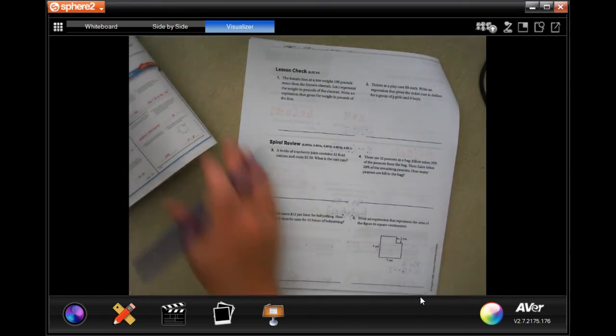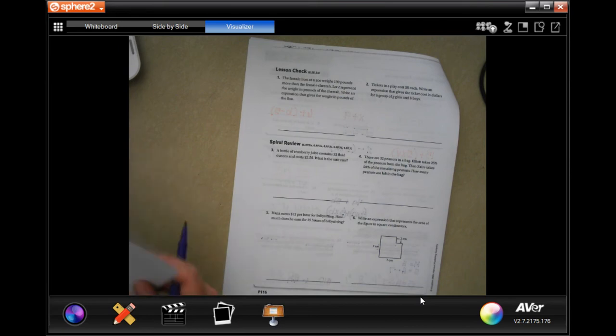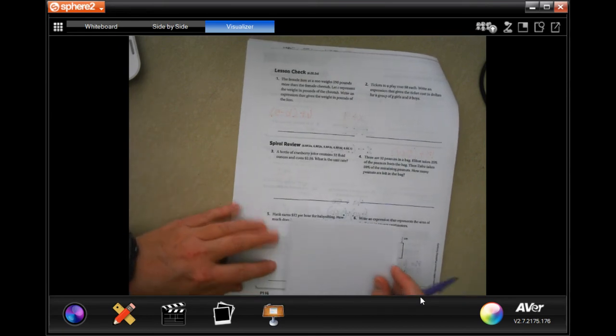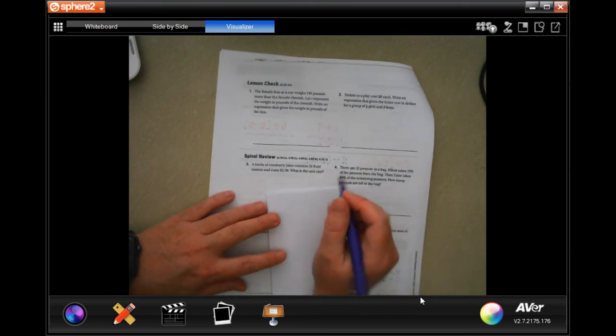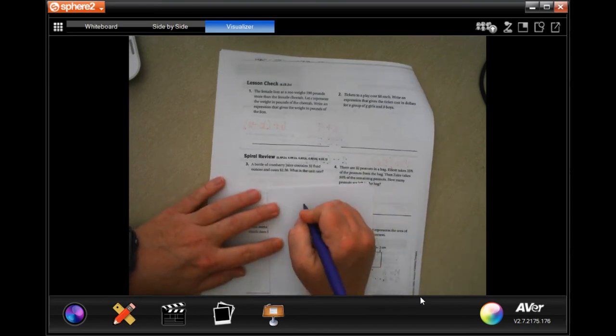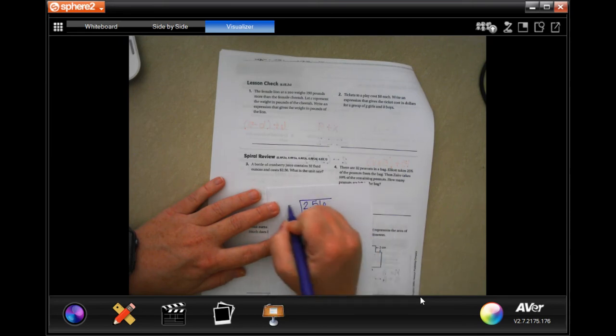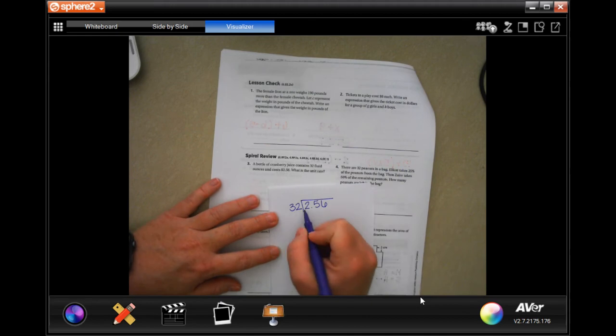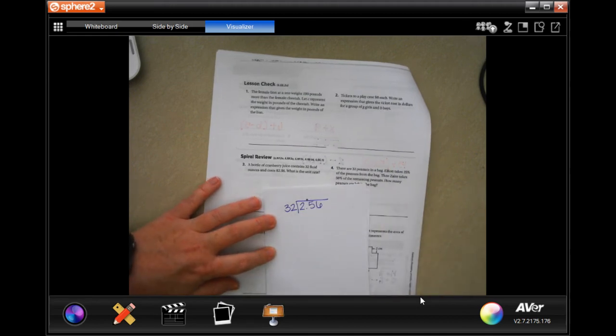Spiral review says a bottle of cranberry juice contains 32 fluid ounces and costs $2.56. What is the unit rate? So we need to take that $2.56 and divide it by the 32 ounces so that we know how much was in one ounce. There's no decimal out here, which means I can just use my decimal out. That's good.